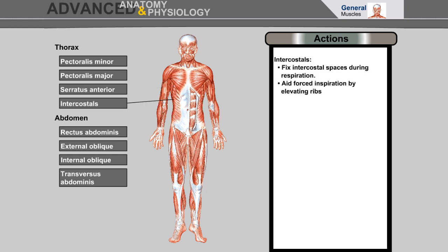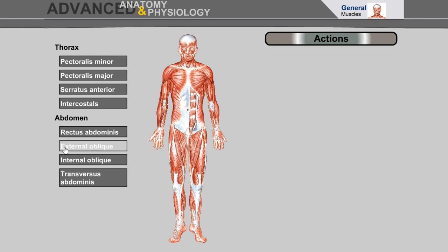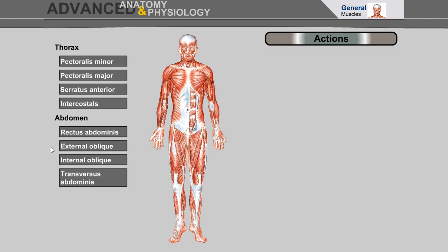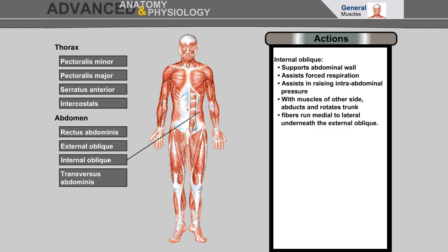Intercostals fix intercostal spaces during respiration and aid forced inspiration by elevating the ribs. Rectus abdominis flexes the trunk, aids forced expiration, and raises intra-abdominal pressure. External oblique supports the abdominal wall, assists forced expiration, assists in raising intra-abdominal pressure; with muscles of the opposite side it abducts and rotates the trunk. Internal oblique supports the abdominal wall, assists forced respiration, assists in raising intra-abdominal pressure; with muscles of the other side it abducts and rotates the trunk; fibers run medial to lateral underneath the external oblique.